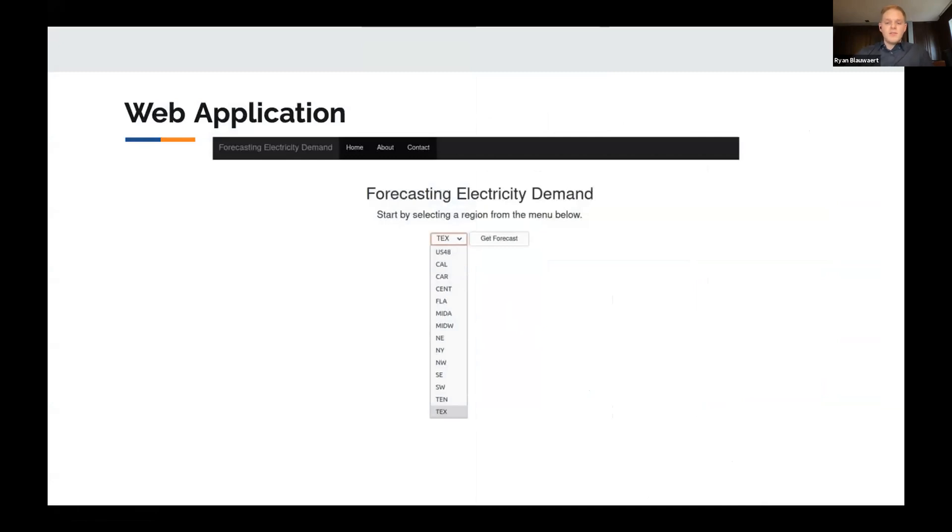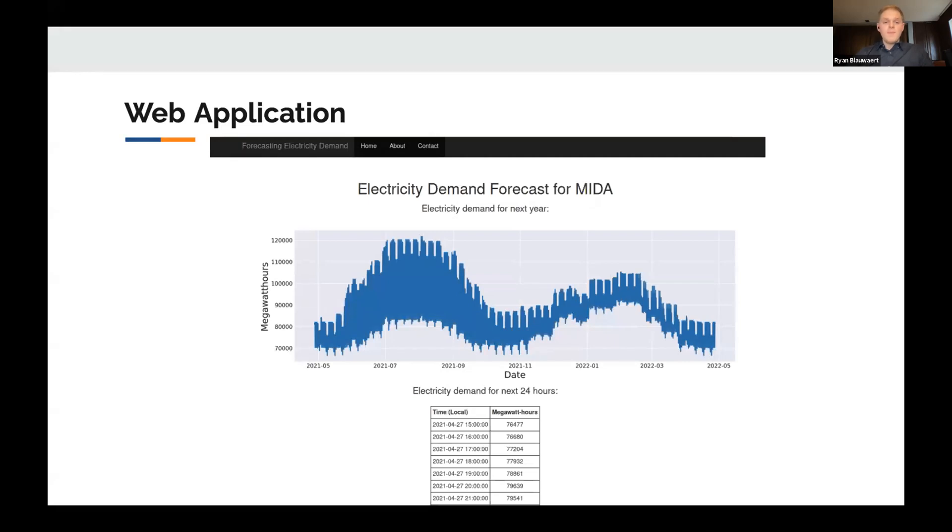So here I just have a couple of screenshots of a very simple web application that I built so that you as the user can access these models and get predictions from them. The homepage just has a drop-down menu where you can select the region of interest, and then it will load data. So here we're predicting for the next year into 2022 for the mid-Atlantic region, and then it also shows the next 24 hours of what we anticipate that demand to be.